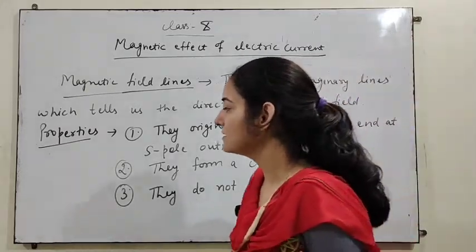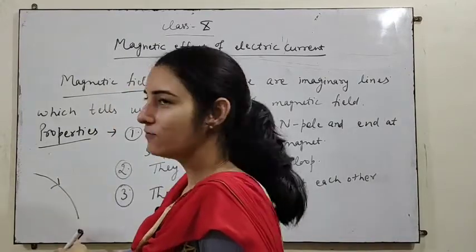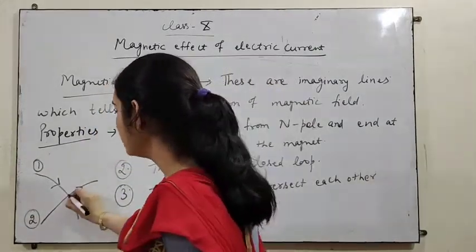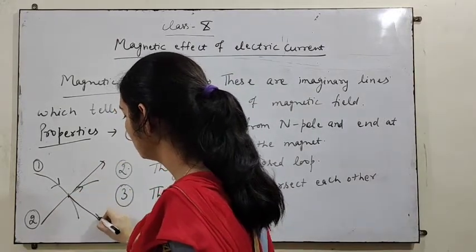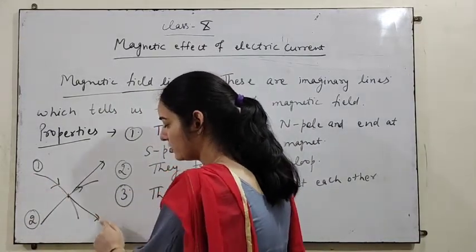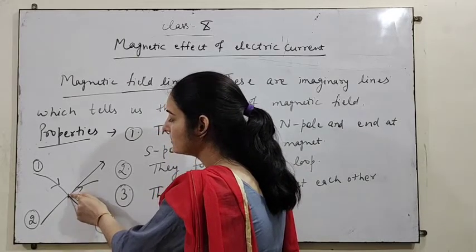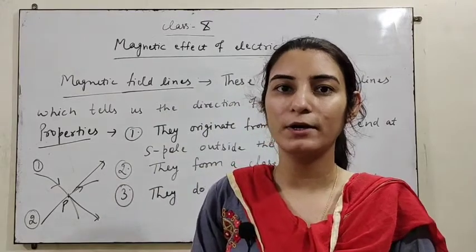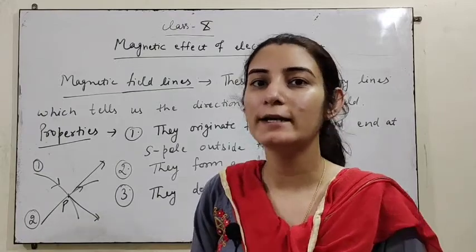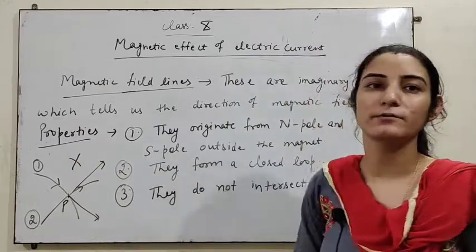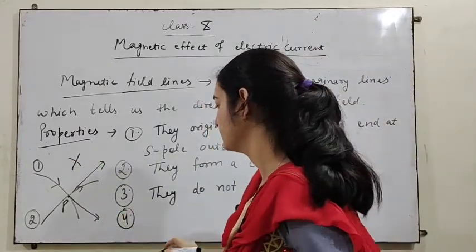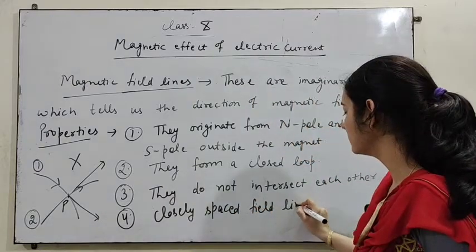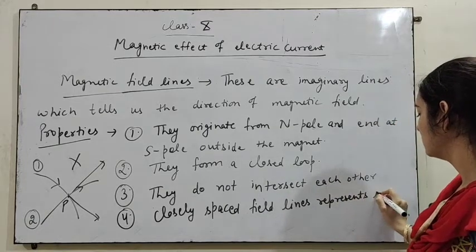Number three: magnetic field lines do not intersect each other. If they did intersect, then at the point of intersection there would be two tangents, meaning two directions of the magnetic field. But at one point there can only be one direction of the magnetic field. That's why we say they do not intersect each other.